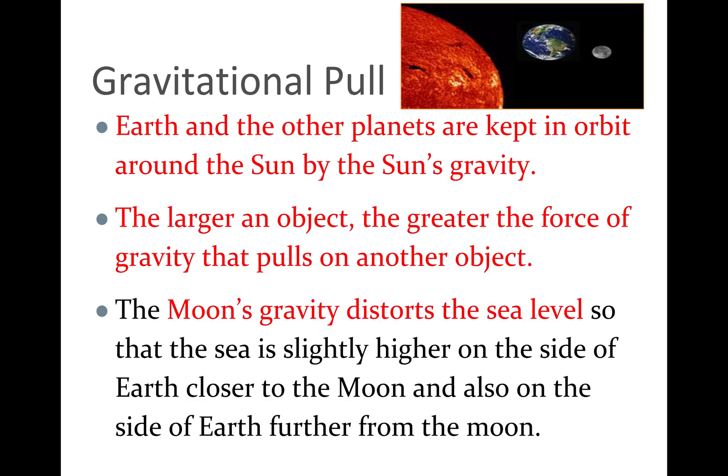Now, gravity depends on a couple things. First of all, it depends on the size of the object. Secondly, it depends on the distance between the two objects. So the sun has gravity that keeps us orbiting, but its gravity is not the same, or the effects are not the same as the moon, which is closer to us, even though it is way, way smaller than the sun. This gravitational pull distorts our sea levels by pulling on the liquid water which flows more easily than our solid land.